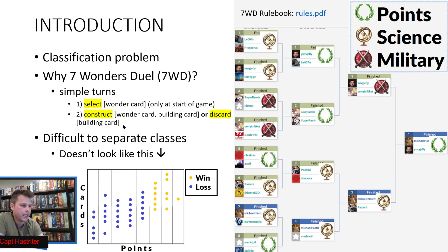7 Wonders Duel is a simple game, but it's got difficult to separate classes. When you reach a certain threshold of points, that doesn't mean that you've won the game. There are two other ways to win the game, science and military, that confuse that a lot.